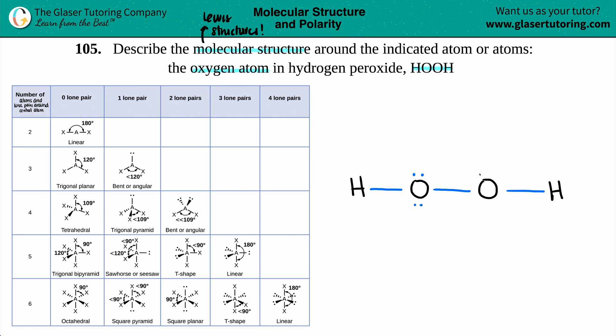So one, two, three, and four, and one, two, three, and four. And now the oxygens have the octet rule, right? Two, four, six, eight, and two, four, six, eight. So we're good. This is the Lewis structure.